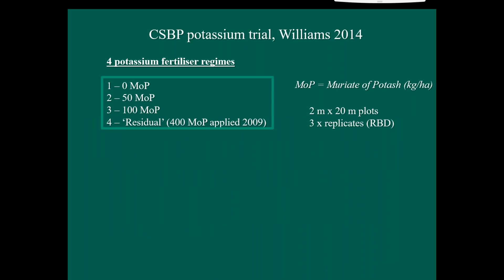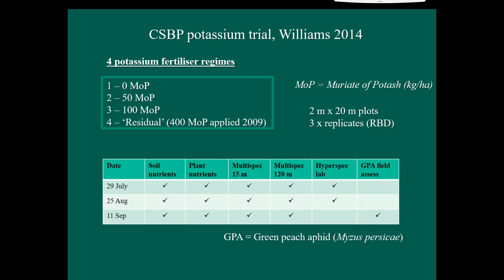So just a brief background on the trial itself. They had a number of fertilizer regimes focused on potassium as a limiting factor. It was two-by-20-meter plots with three replicates and randomized block design. So I focused on these treatments with zero kilograms per year of myriad of potash as a form of potassium, and then 50 and 100. Those were applied each year from 2009. And then a residual treatment, which 400 kilos was applied up front and then none after that to see how that residual effect worked out.